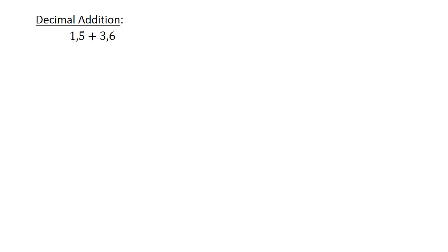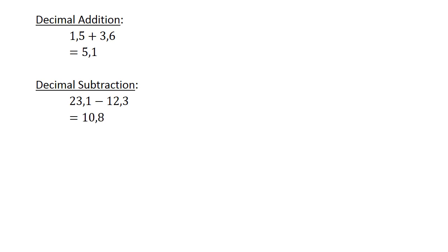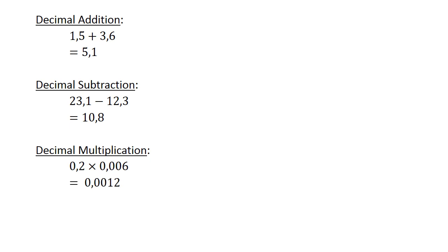Decimal addition: 1.5 plus 3.6 equals 5.1. Decimal subtraction: 23.1 minus 12.3 equals 10.8. Decimal multiplication: 0.2 times 0.006 equals 0.0012.